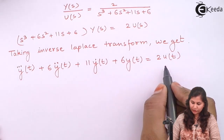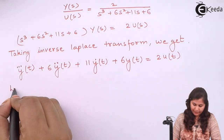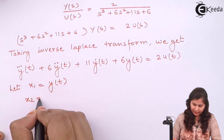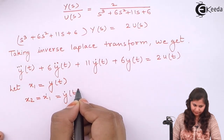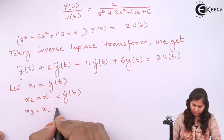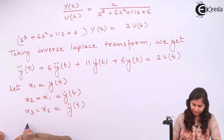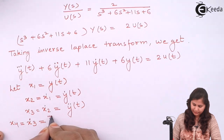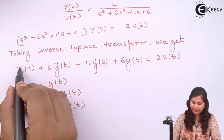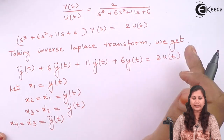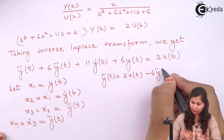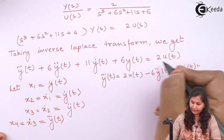Now we choose the state variables from this differential equation. Let x1 = y(t), x2 = ẋ1 = ẏ(t), x3 = ẋ2 = ÿ(t). Then ẋ3 = y‴(t). From the differential equation, rearranging all terms to the right-hand side: y‴(t) = 2u(t) − 6ÿ(t) − 11ẏ(t) − 6y(t).